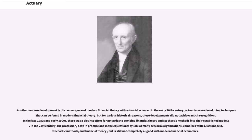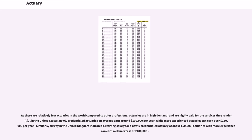Another modern development is the convergence of modern financial theory with actuarial science. In the early 20th century, actuaries were developing techniques that can be found in modern financial theory, but for various historical reasons, these developments did not achieve much recognition. In the late 1980s and early 1990s, there was a distinct effort for actuaries to combine financial theory and stochastic methods into their established models. In the 21st century, the profession combines tables, loss models, stochastic methods, and financial theory, but is still not completely aligned with modern financial economics.